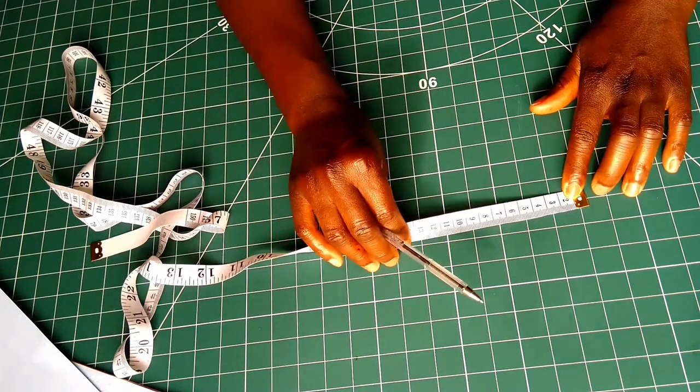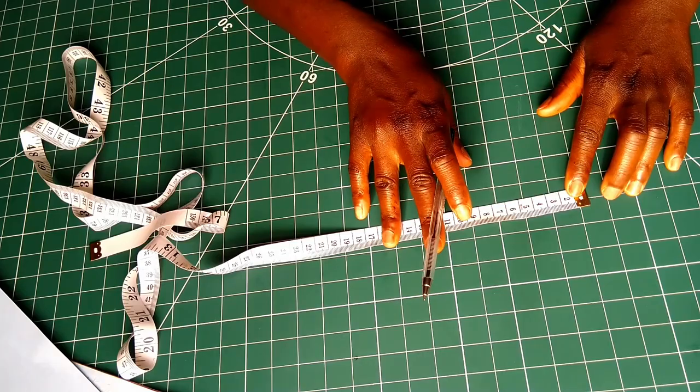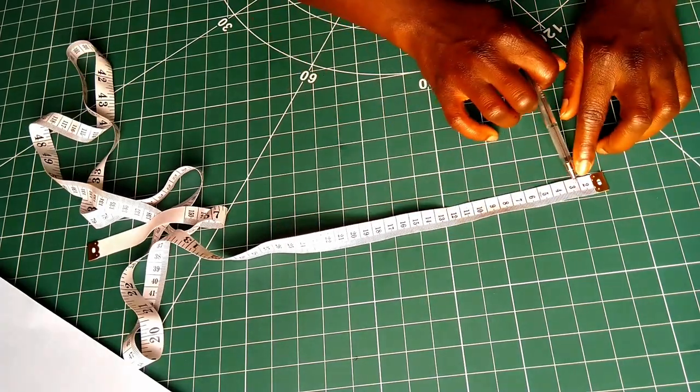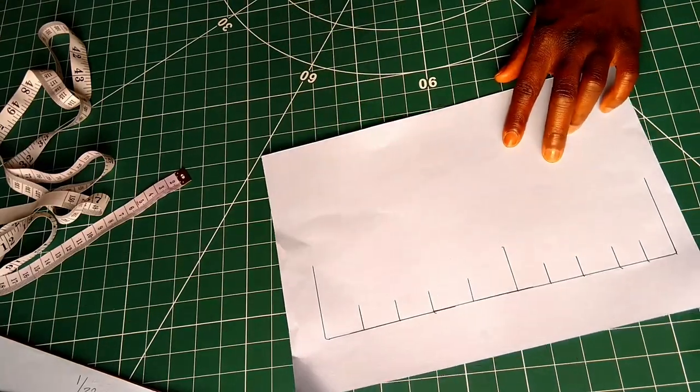So firstly, you will learn how to read the centimeter side, because in my opinion that's the easiest. So for clarity's sake, I've expanded one centimeter on a piece of paper. Every one centimeter has been divided into 10 equal parts.